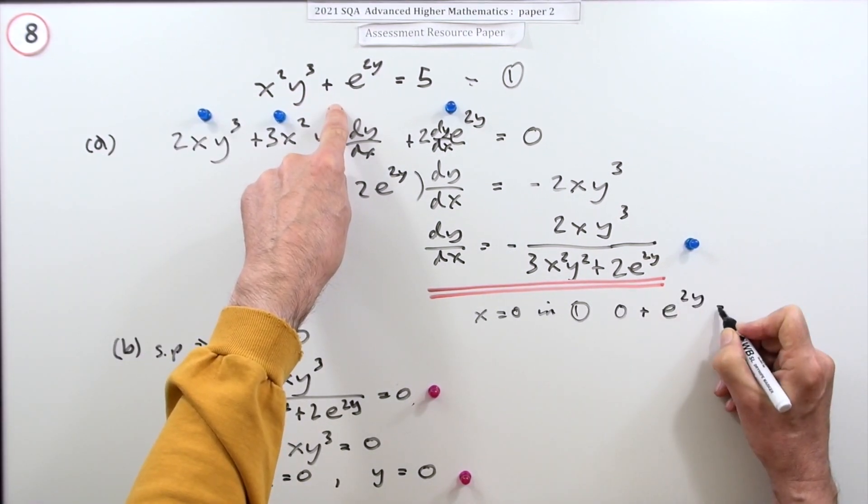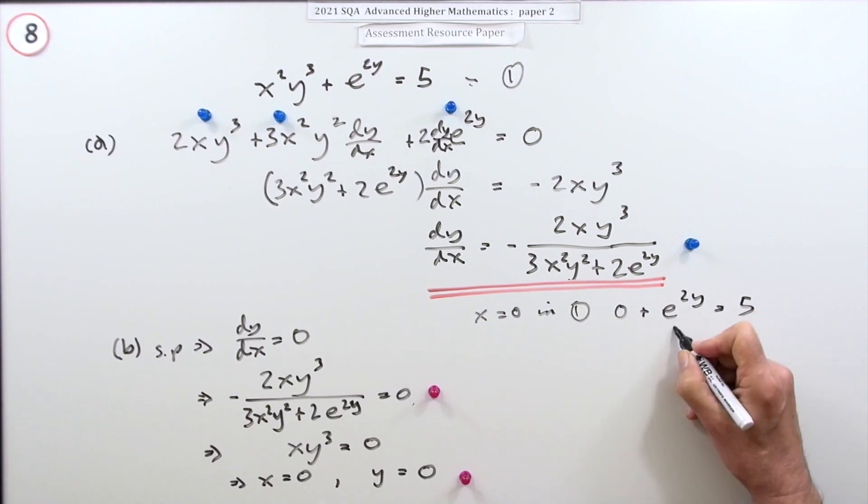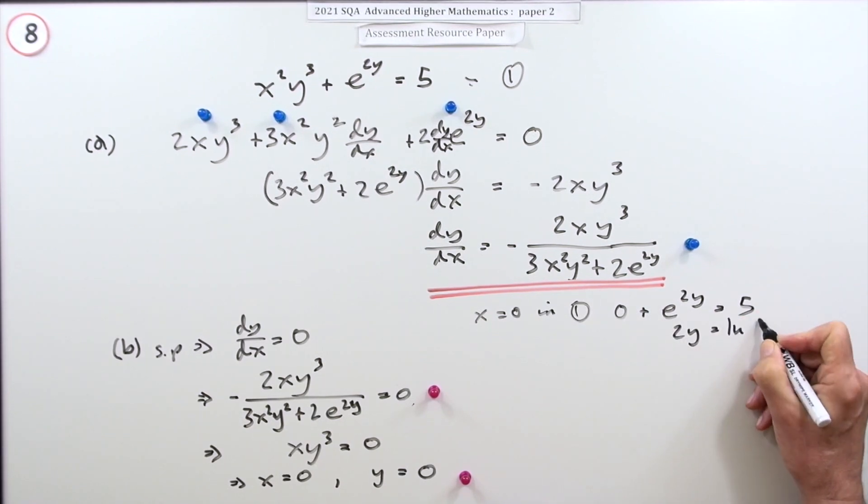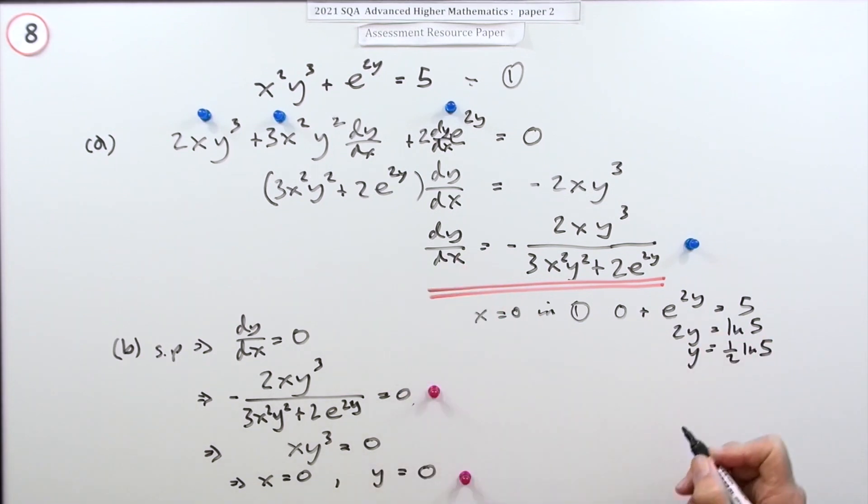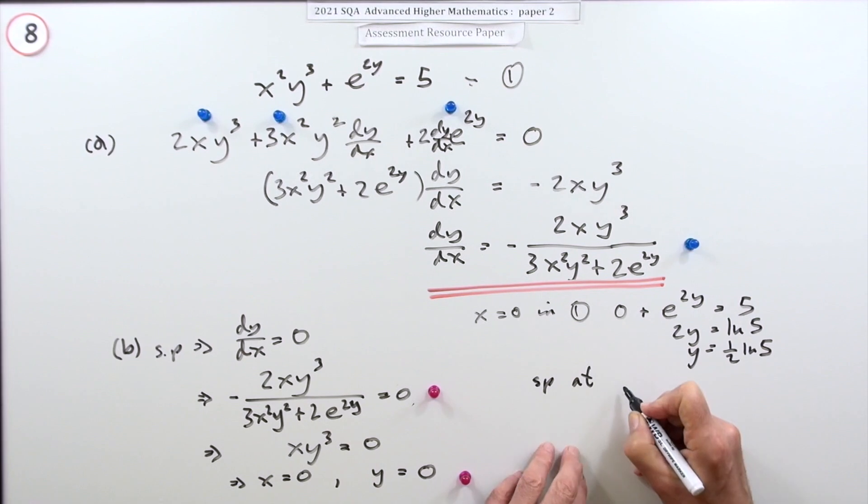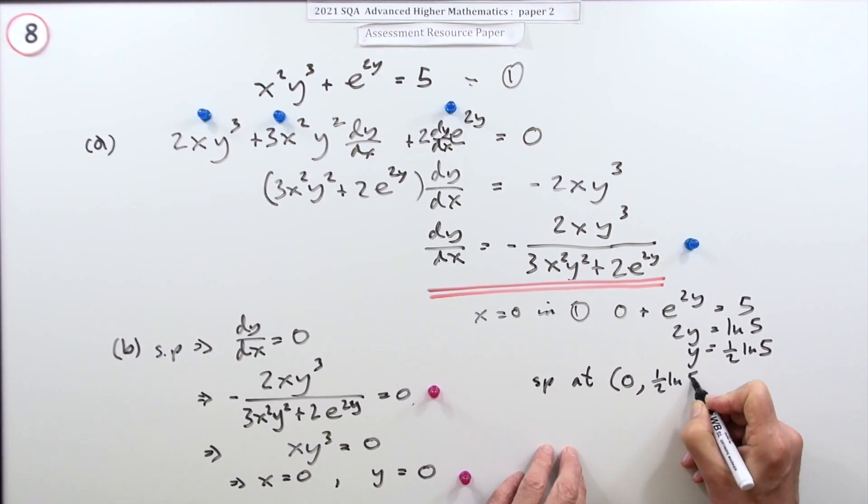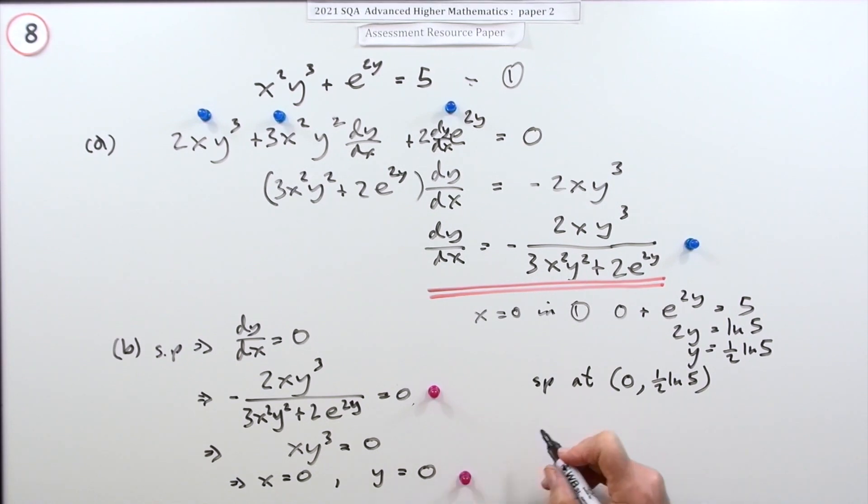In which case 2y would be ln 5, so y is going to be either ln(√5) or ½ ln 5, whichever you like. That means there is a stationary point at (0, ½ ln 5). So something must go wrong with the other one then.